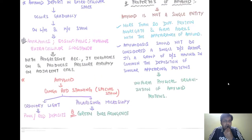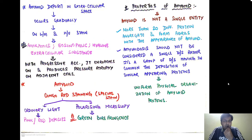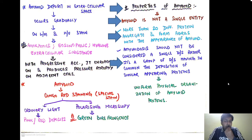Now let's look at the properties of amyloid — physical and chemical. Remember, amyloid is not a single entity. More than 20 different types of proteins aggregate to form fibrils with the appearance of amyloid. Amyloidosis should not be considered a single disease; rather, it is a group of diseases sharing in common the deposition of similar-appearing proteins, giving a uniform physical organization.